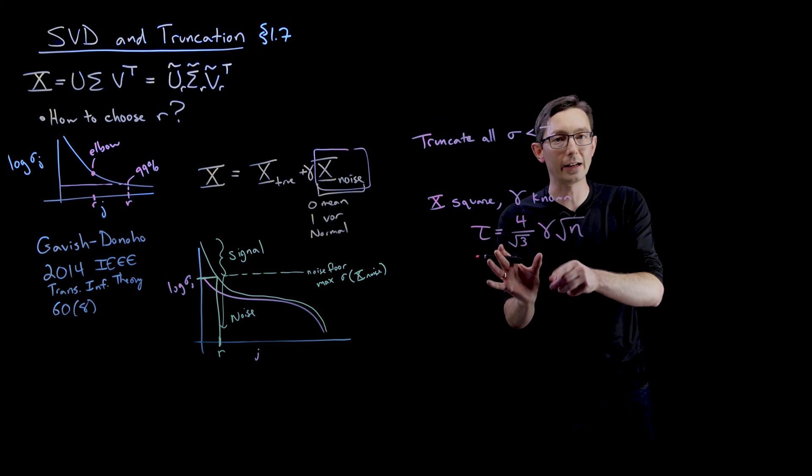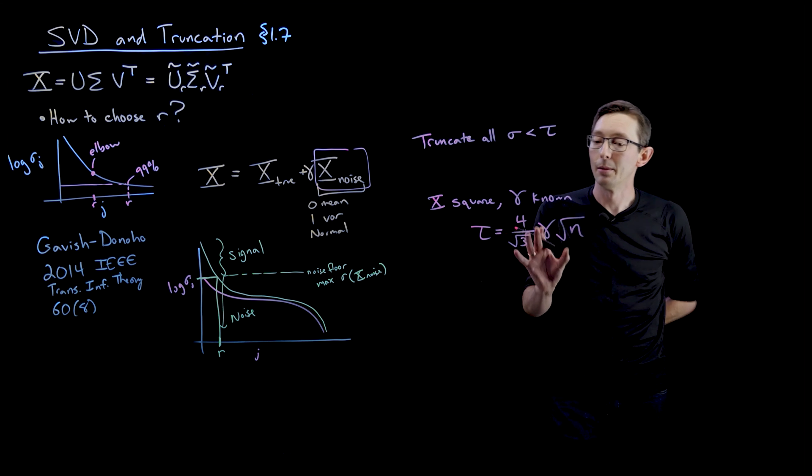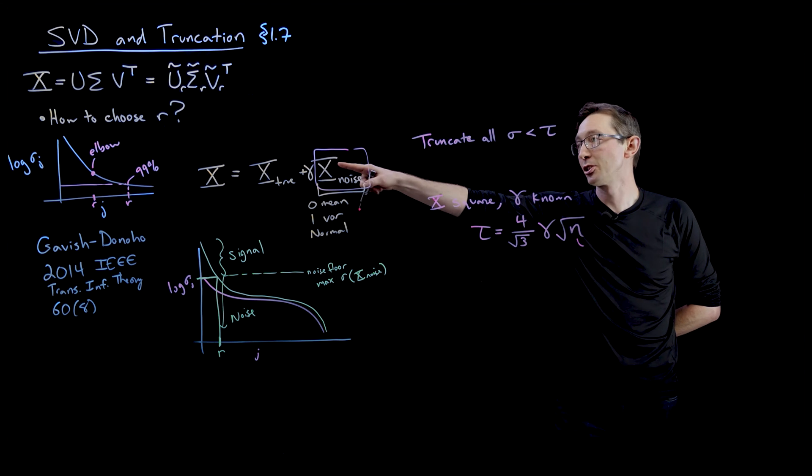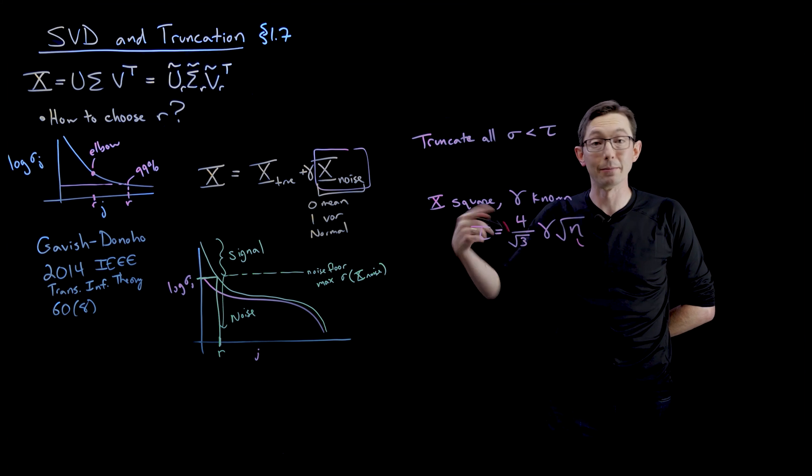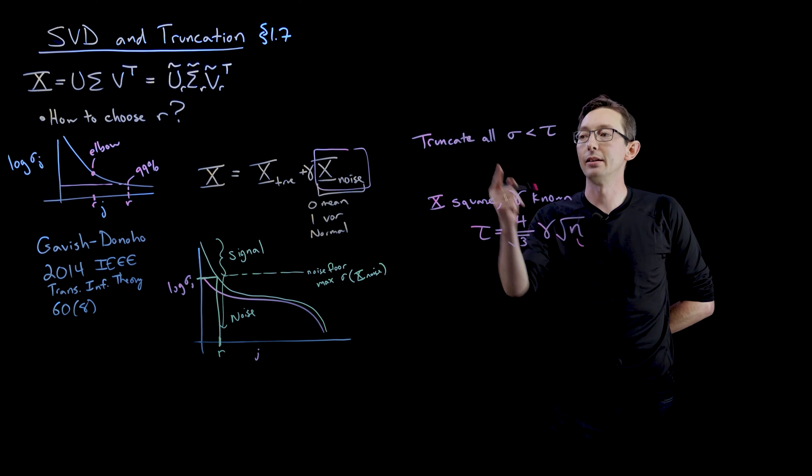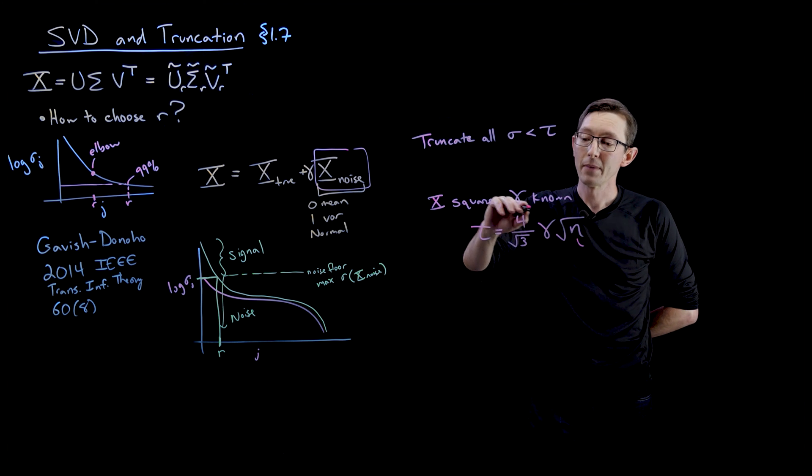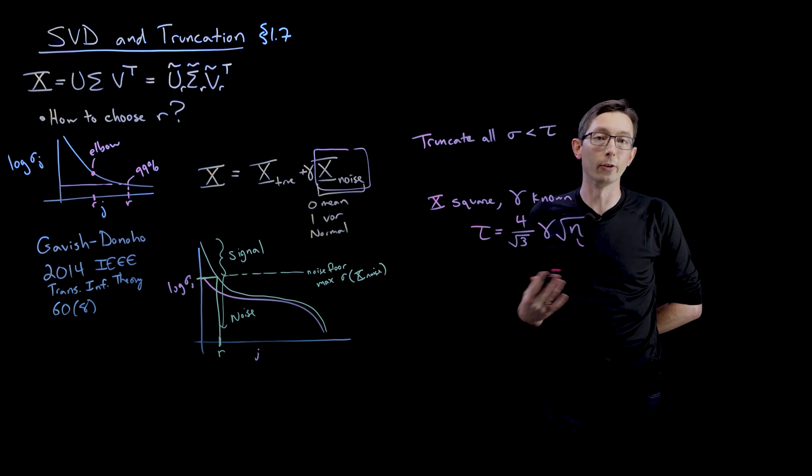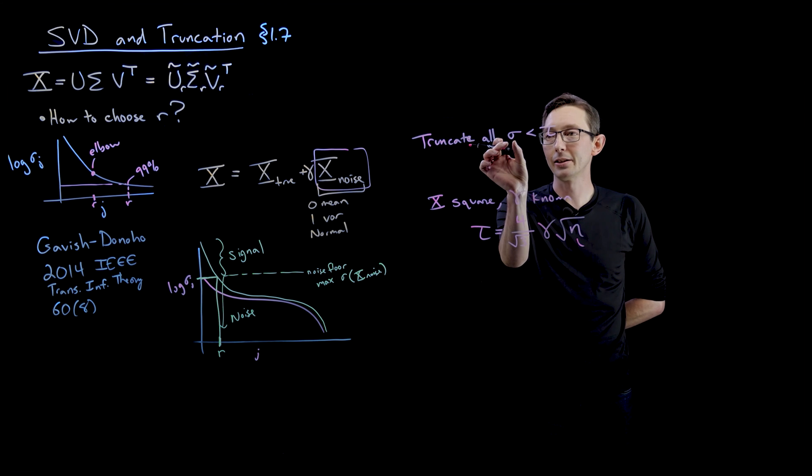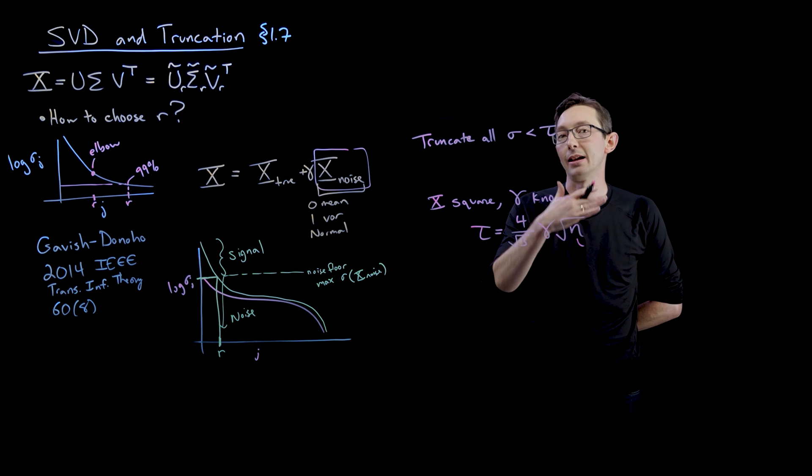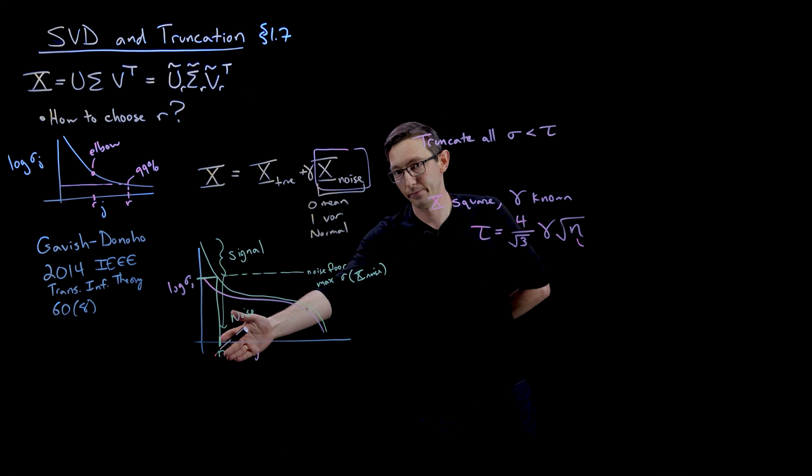This is a very nice compact, this is not an easy formula to derive, but it's a beautiful compact formula in terms of N, the dimension of your matrix X, if it's a square N by N matrix. Gamma, the amount of noise, if you actually know how much noise there is. And this factor 4 over root 3. Any singular value that's larger than that you keep. Any that's smaller than that you truncate.